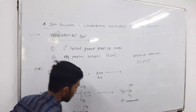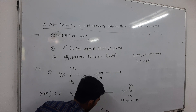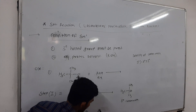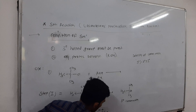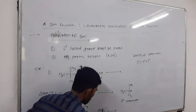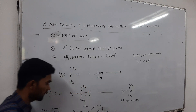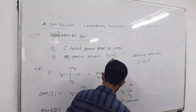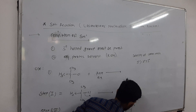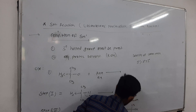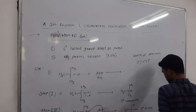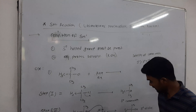In the second step, there is an attack of aqueous KOH. KOH dissociates into K⁺ and OH⁻ ions. OH⁻ is the nucleophile. It attacks the tertiary carbocation, resulting in the formation of a tertiary alcohol group as the product.